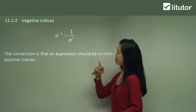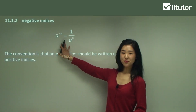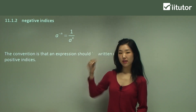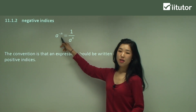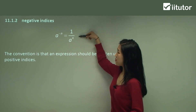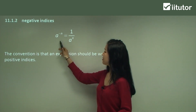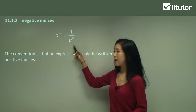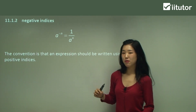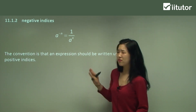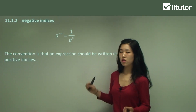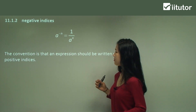Now we're onto the negative indices. Have a look at our rule. When you get a to the power of a negative index, say for example negative n, see how we change this into something like this? We make it into a fraction. We put this on the denominator by simply changing the sign to a positive. That's a new rule you're going to have to remember, and this is where a lot of students get confused because they don't know how to convert from one to another.